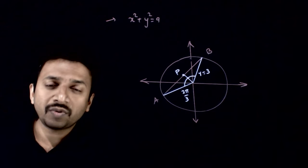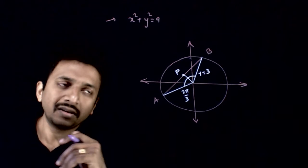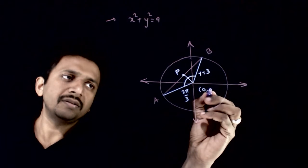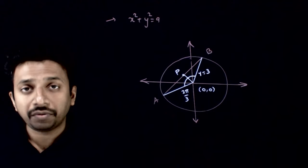So welcome students. In this question, you are given that you have a circle whose center is at origin and having a radius of 3 units.